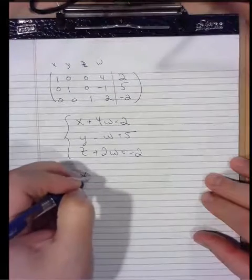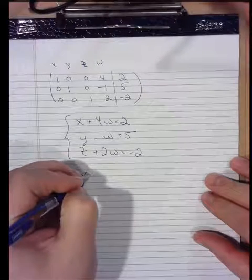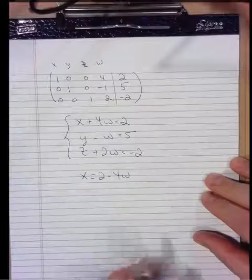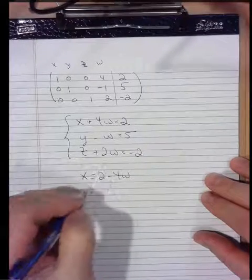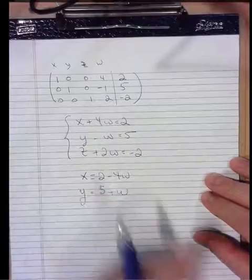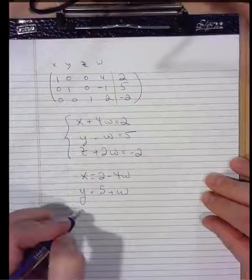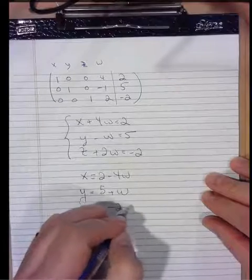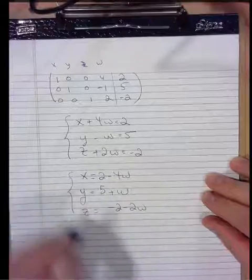So solving these equations for in terms of w, x equals 2 minus 4w from the top one, y equals 5 plus w from the second one, and z equals negative 2 minus 2w for the third one.